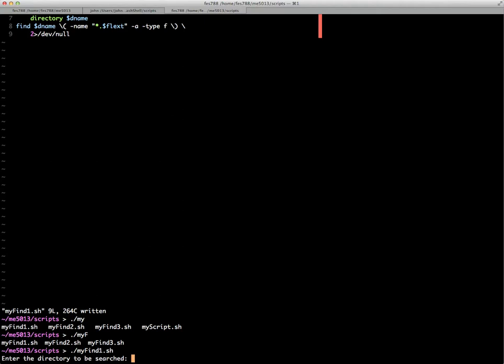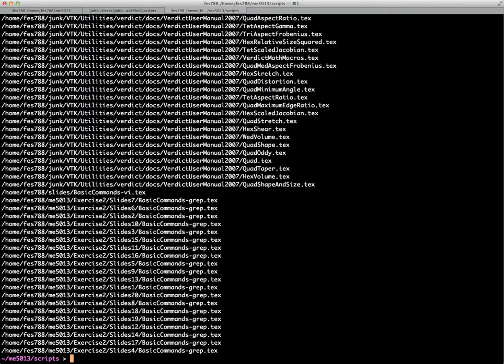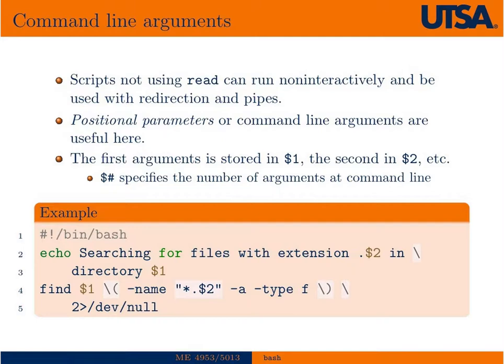you can see it pauses and it says enter the directory to be searched. So I'll enter home FES 788. And the file extension to find, we'll look for tech files. And there they are. Okay. So that's how that works. And you can see it's a little bit, we created a script that simplified our find command.